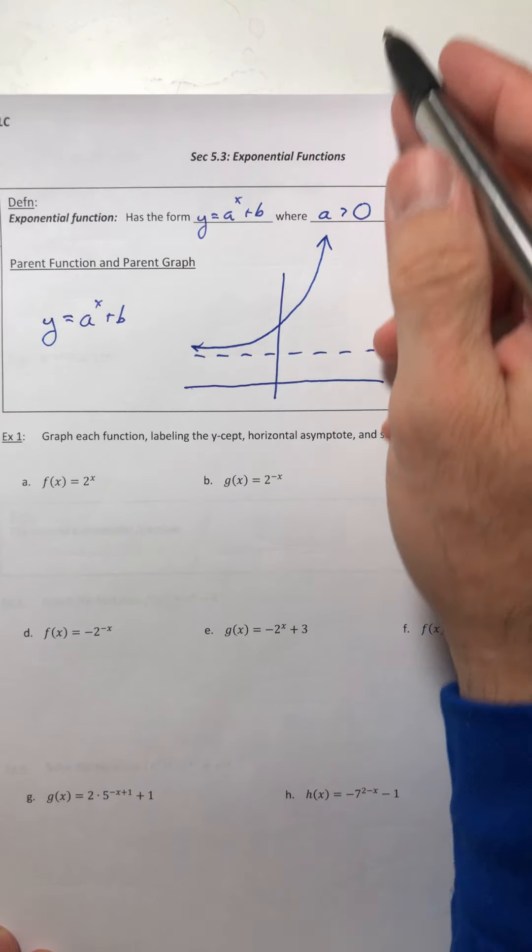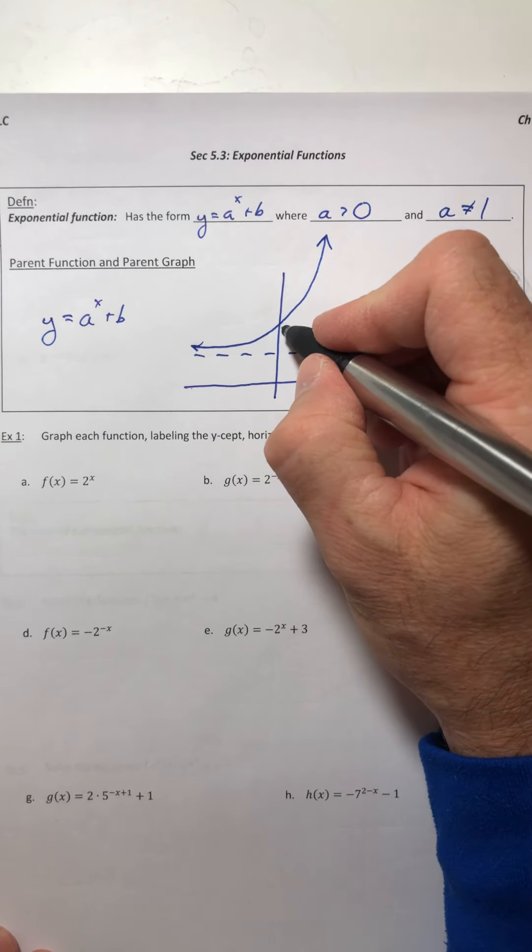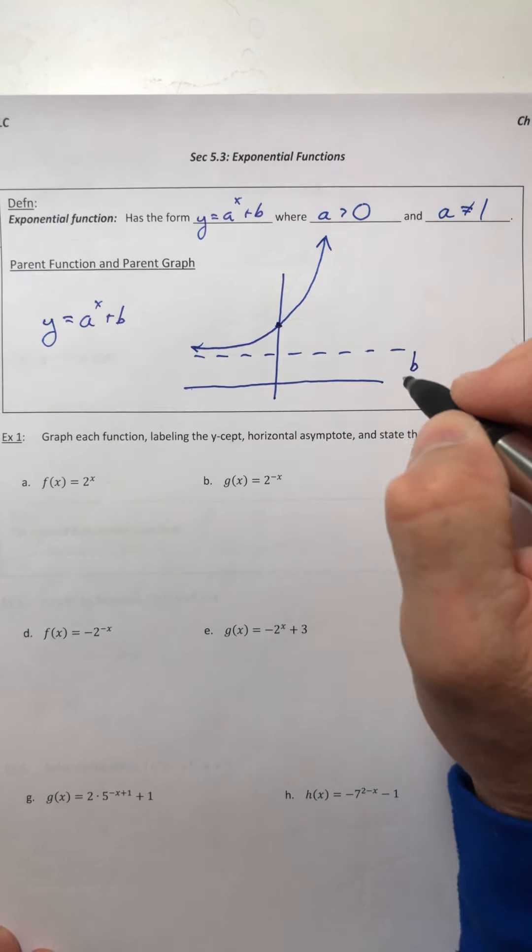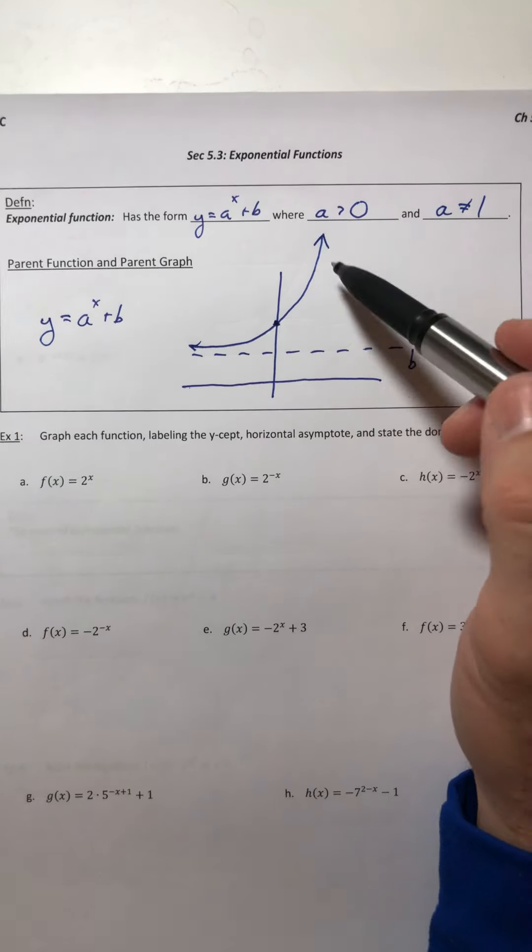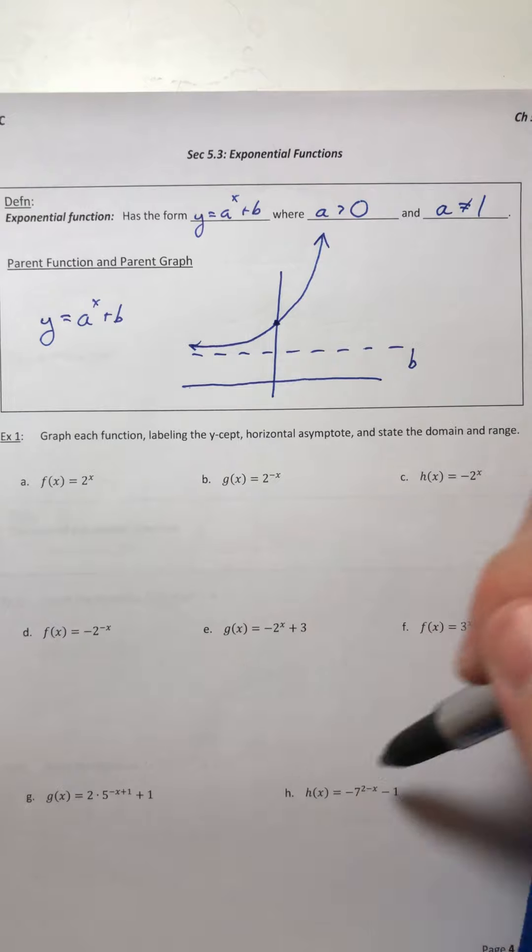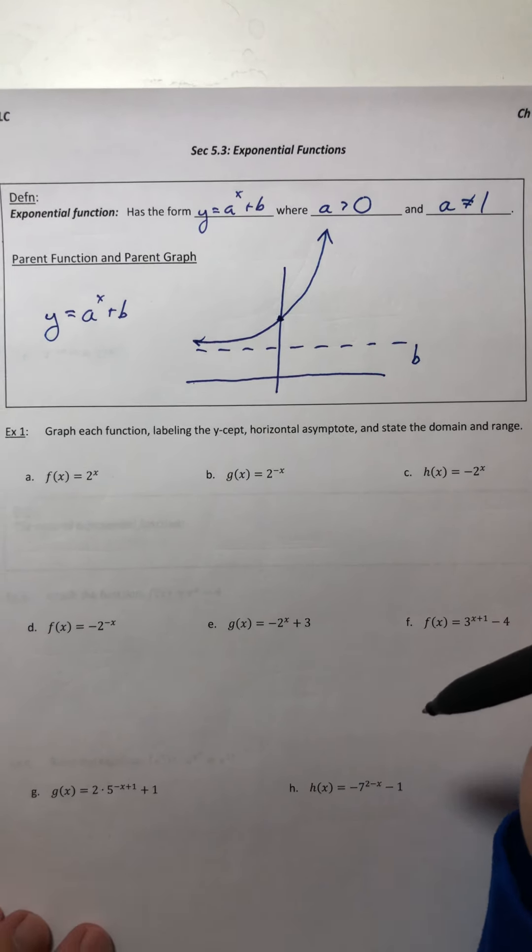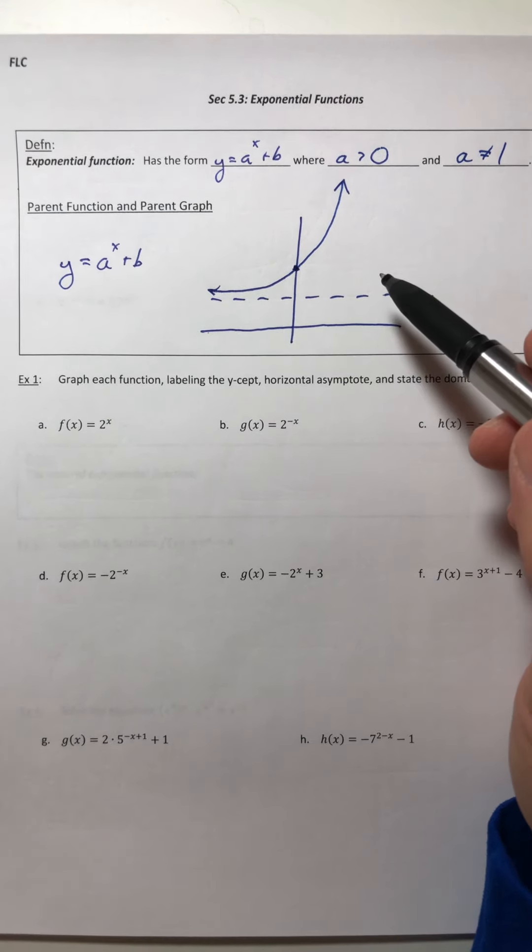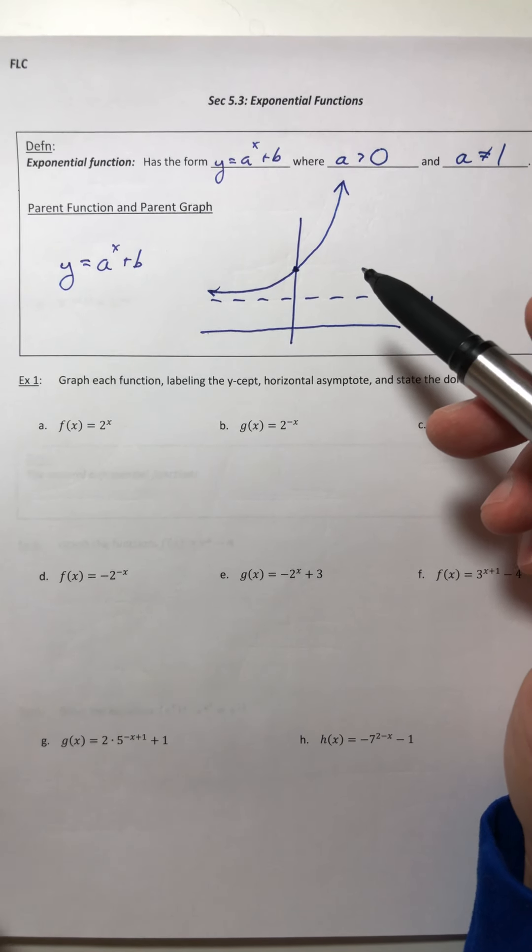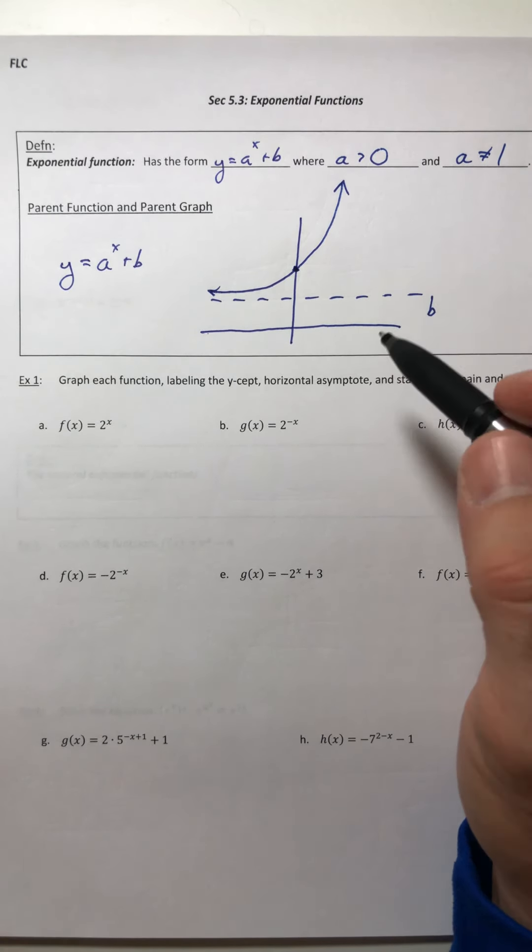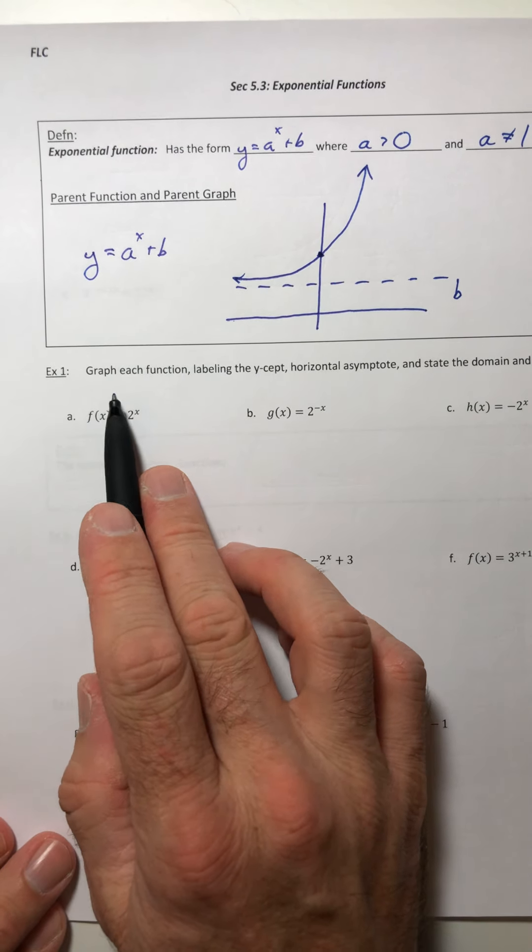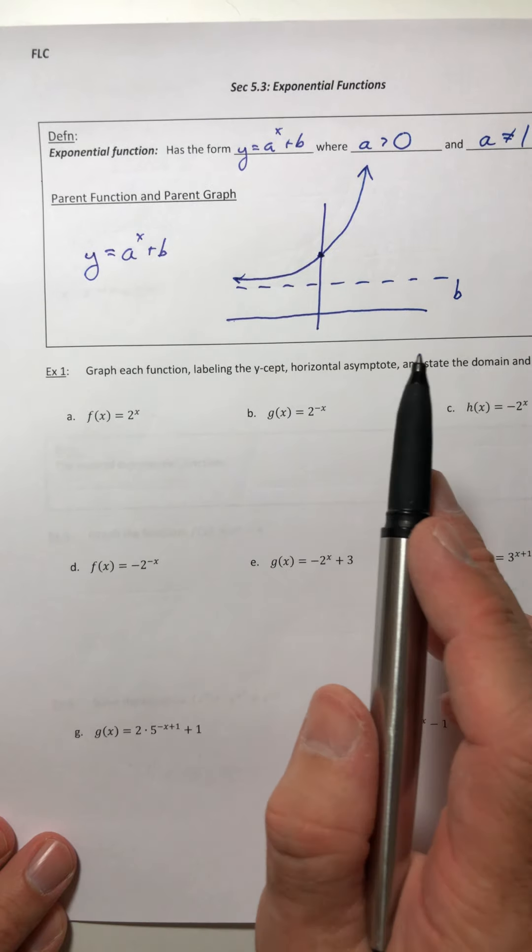So it gets higher and higher and higher, and then it's got a y-intercept. We're going to be using this parent graph to figure out the graphs of all of these functions down here using what we know about how things are going to flip upside down, when it's going to turn over the y-axis, and so on. Example one: graph the function, label the y-intercept, the horizontal asymptote, and state the domain and range.